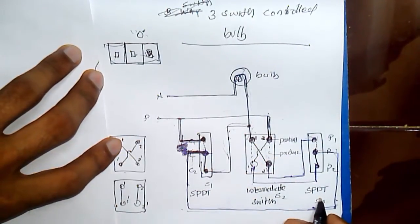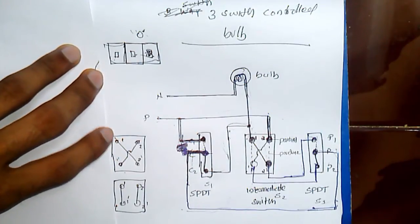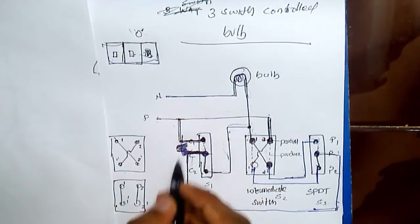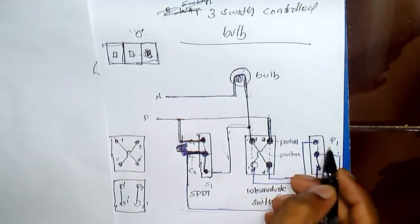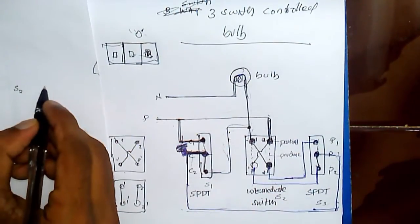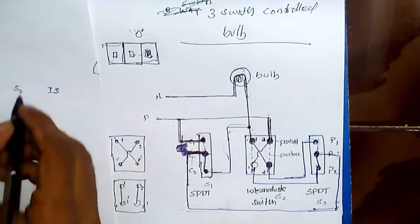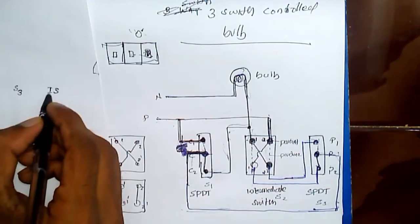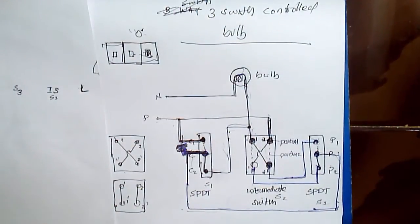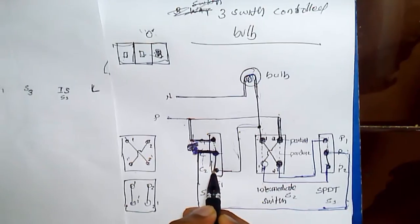Now for the working: we have switch S1, switch S2, the intermediate switch, and switch S3, plus the lamp. The switch is at position C2.